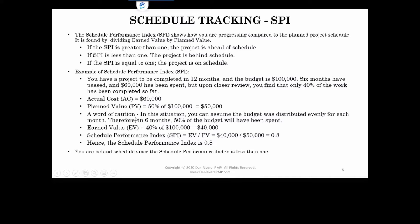One word of caution here for this calculation: the assumption for both SPI and CPI calculations is that the project budget is distributed evenly for each month. So in this case, at six months, 50% of the project budget would have been spent. This is an assumption based on the time that has passed — six months out of 12 months. The assumption that the project has its budget evenly distributed also has to be true.